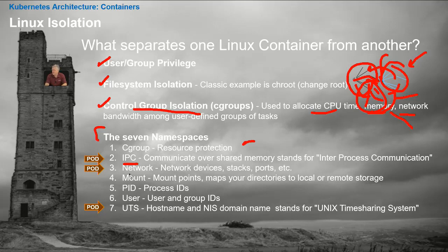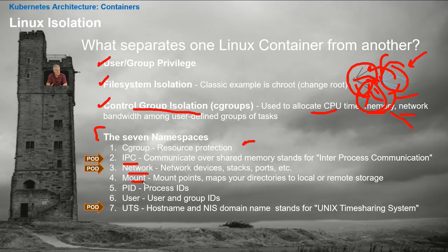Item three is the network namespace. The idea with network namespace is that we completely separate network access, making each one of the containers think they have their own access to their own network and they don't mix with each other. Regarding mount, that's the mount points where you connect to local or remote directories — how you connect your hard drive or a remote hard drive.